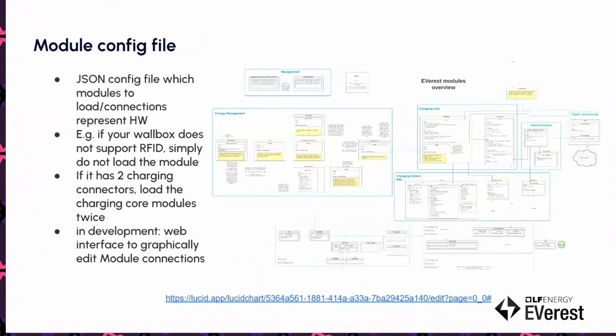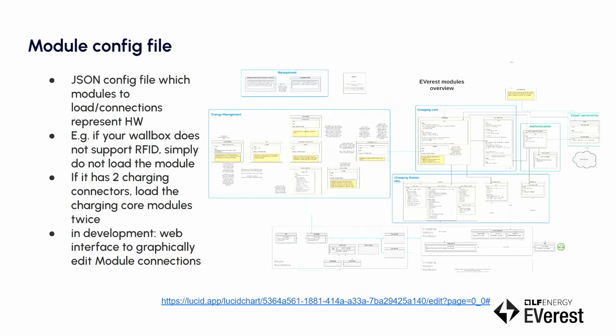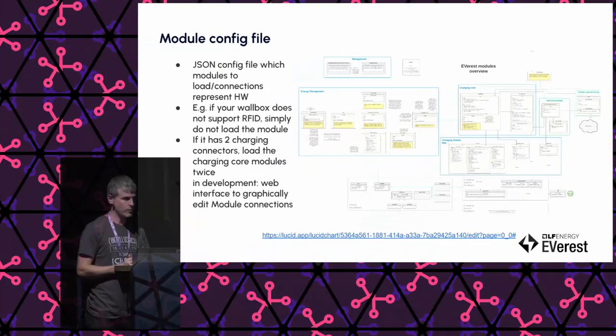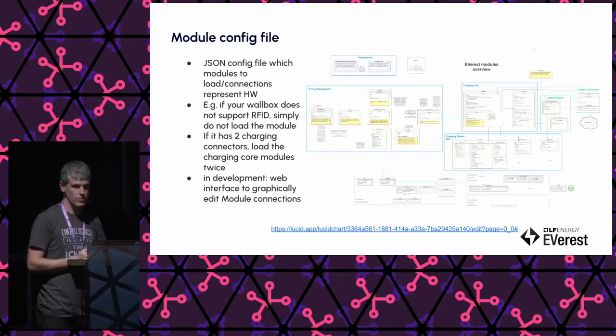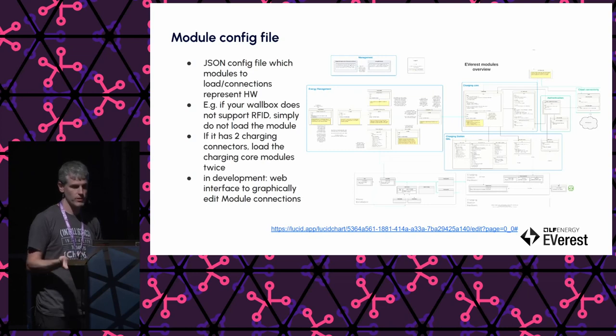One central thing is the configuration file in Everest. It's basically a JSON file where you describe which modules to load, and it kind of represents the hardware. So the idea is if you build a wallbox with two outlets to charge two cars, you basically just load the charging modules twice. Then maybe you want cloud connectivity to your backend, so you load the OCPP module. And maybe you have some energy management, so you load some energy management modules — and then you've basically configured your product.